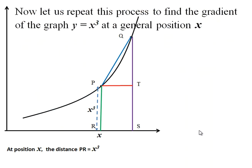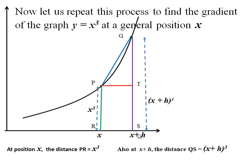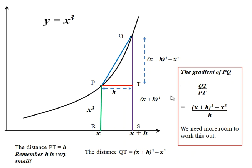All right, so this is meant to represent Y equals X cubed, but the diagram is basically the same. Now, at this general position X, the height of the curve is X cubed. Move along a distance H, and we get this height is now X plus H cubed. This distance is H. And so the gradient of the curve here, or the gradient of PQ, is equal to this distance over this distance. Again, like this.